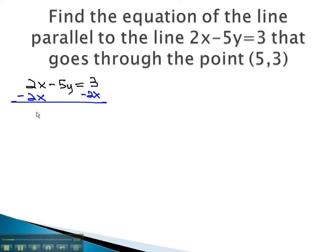Subtracting 2x from both sides gives us negative 5y equals negative 2x plus 3. Dividing every term by negative 5 gives us y equals 2 fifths x minus 3 fifths.